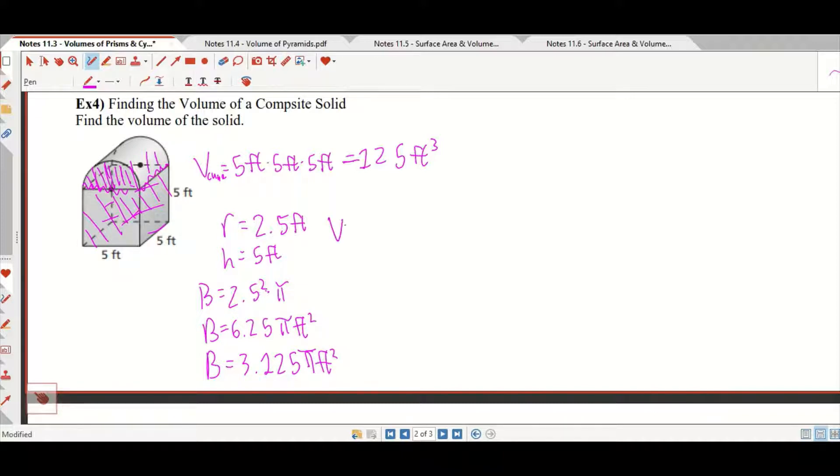And you get 3.125. So the area of the base is really 3.125 pi feet squared. Now that means that the volume of the half cylinder is going to be equal to 3.125 pi feet squared times the height, which is 5 feet. So we multiply that by 5, and that's the volume of the half cylinder: 15.625 pi feet cubed.